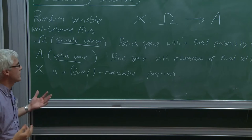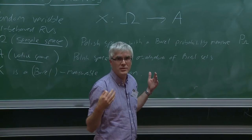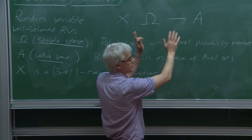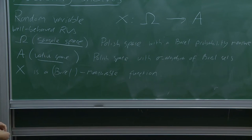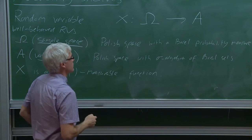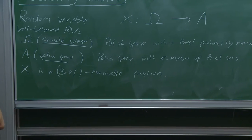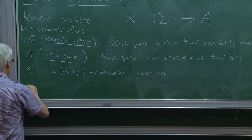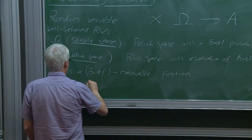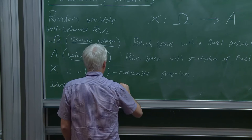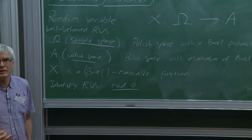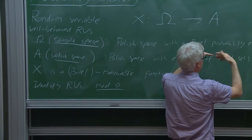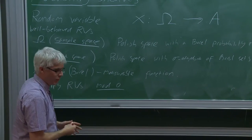In probability theory one often considers somewhat more general definitions for the general theory, but when you look at many books on probability theory almost all the good examples fit into this setting. So these well-behaved restrictions are not a significant restriction from the viewpoint of probability theorists. Another thing I'm going to do — which is not always done — is identify random variables mod zero, which means modulo almost-everywhere equality. Probability theorists tend not to identify modulo zero, but the relationship of almost-everywhere equality is very important.